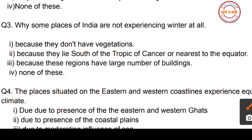Question number three: why are some places of India, especially in South India, not experiencing winter at all? Four options: option one, because they don't have vegetation; option two, because they lie south of the Tropic of Cancer and are nearer to the equator; option three, because these regions have a large number of buildings; option four, none of these.